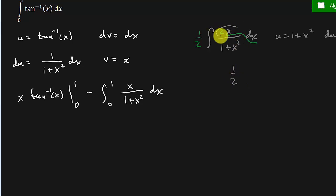And so this is going to be 1 half, and then the 2x dx, we're going to replace that with du. And then the 1 plus x squared, we're going to replace that with u. And so this is 1 half natural log absolute value of u, which is equal to 1 half natural log 1 plus x squared. We're going to replace the u with 1 plus x squared.